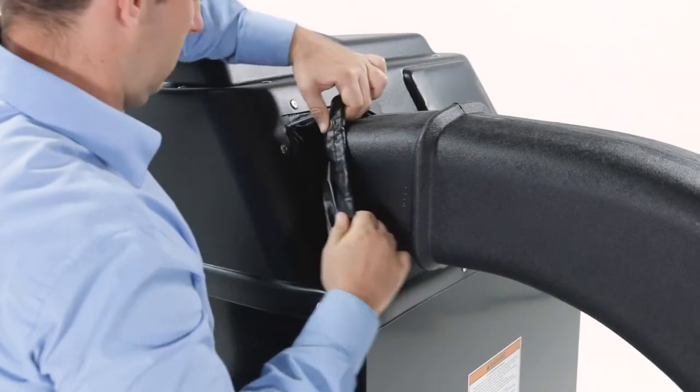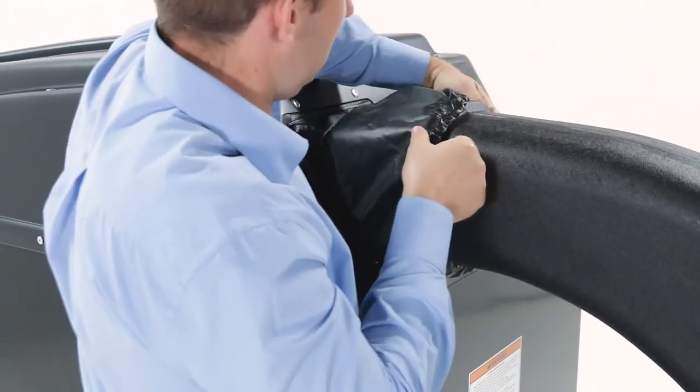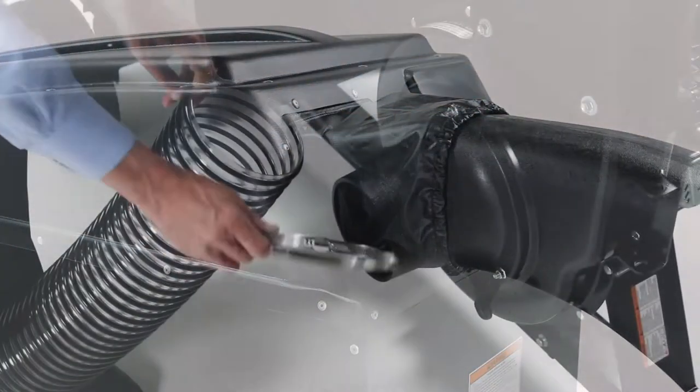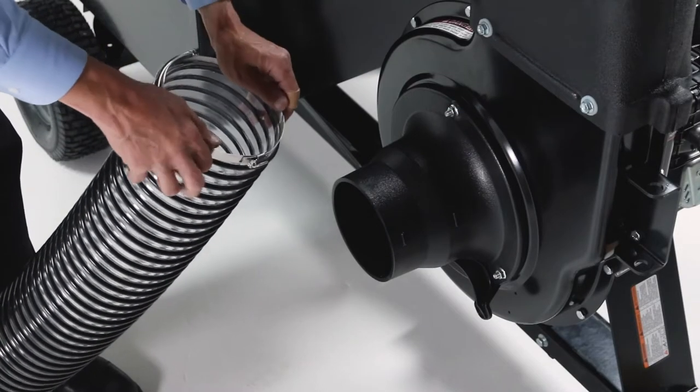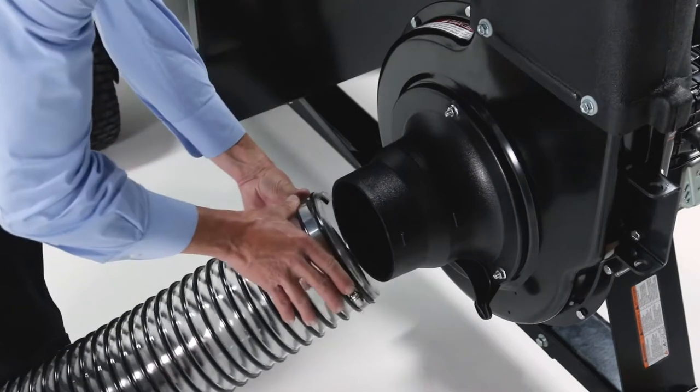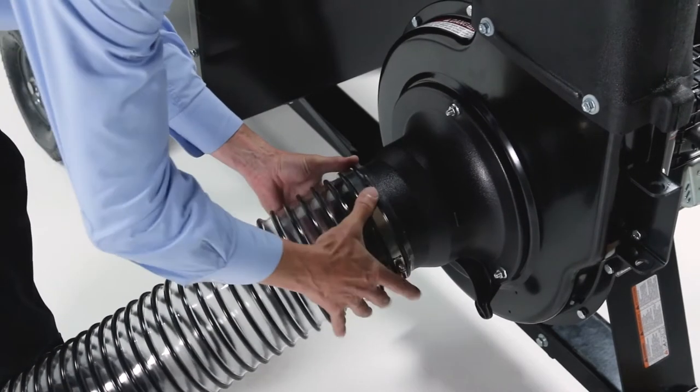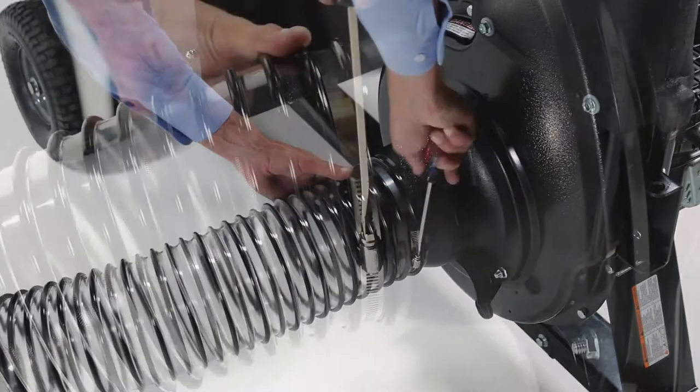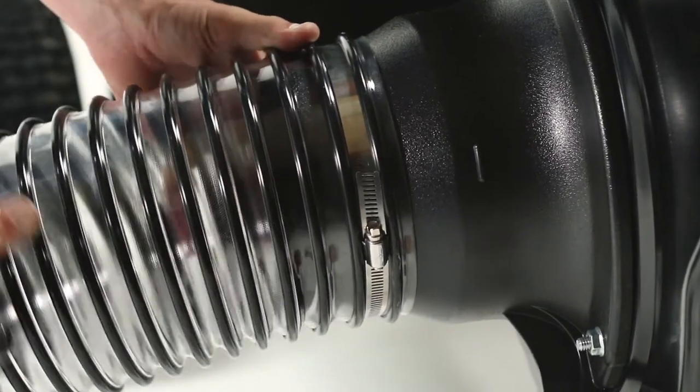Now, pull the vinyl boot onto the end of the elbow. Next, slide a hose clamp over the end of the hose. Then, push the hose onto the adapter nozzle. Now, secure the hose in place, taking care not to collapse the adapter.